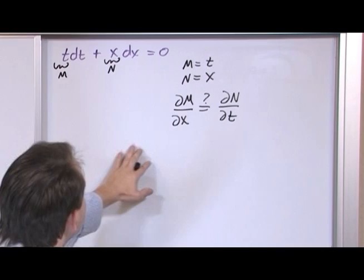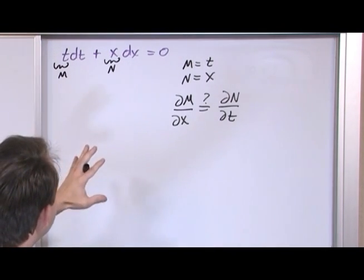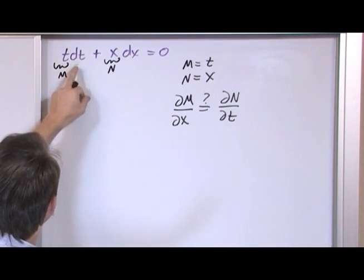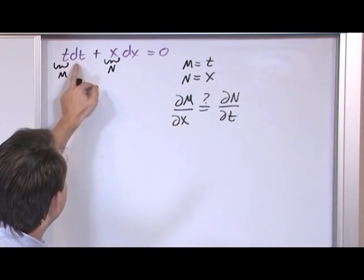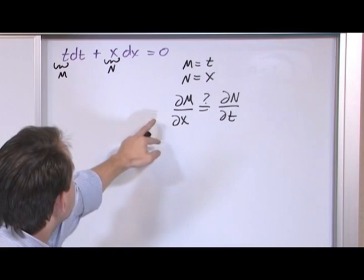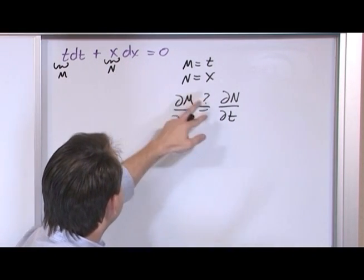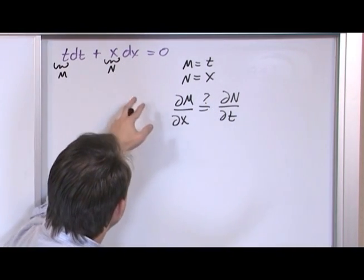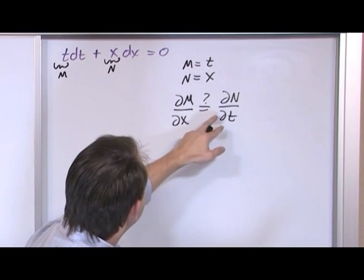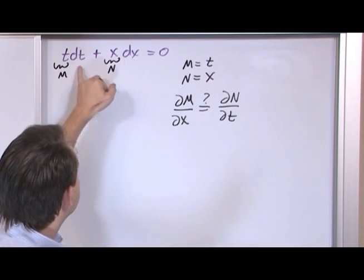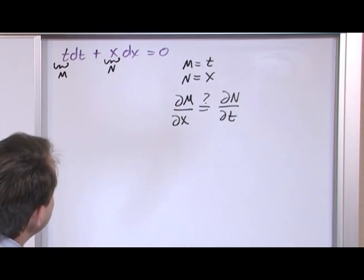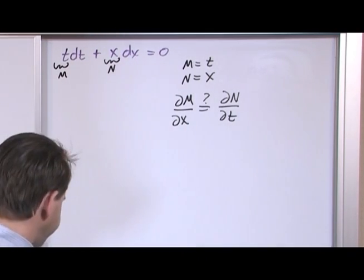One way to remember this constraint to memorize, it doesn't really help you prove it, but one way to remember it is, m is always the function in front of dt. So for your constraint, you're taking partial m with respect to the other variable dx. n is always in front of dx. So in your constraint to test it, you're taking partial n with respect to dt, which is the other variable. So it gets confusing because you might start taking the partials with respect to these, but you have to remember to take it with respect to the other guy.